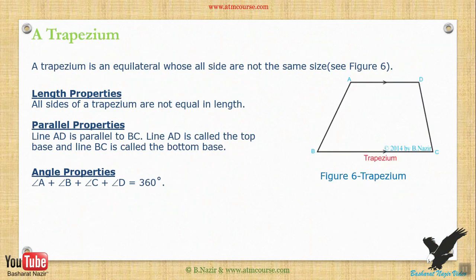Properties of a trapezium: a trapezium is a shape whose sides are not all the same size. See figure 6. Length properties: all sides of a trapezium are not equal in length. Parallel properties: line AD is parallel to BC. Line AD is called the top base and line BC is called the bottom base. Angle properties: angle A plus angle B plus angle C plus angle D equals 360 degrees.